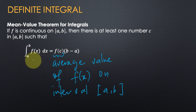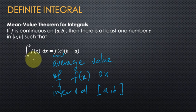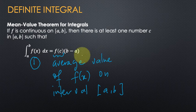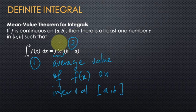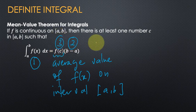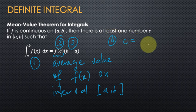The steps to find the number c are: first, compute the definite integral. Second, find b minus a. Third, substitute c into f. And then finally, you can get c equal to what?